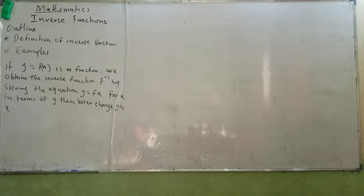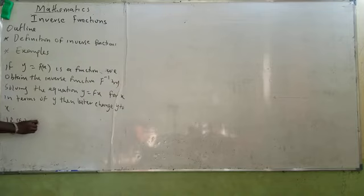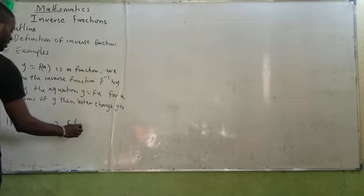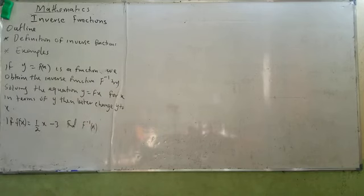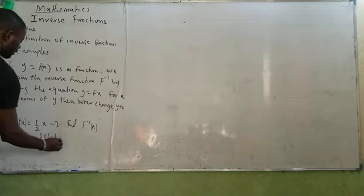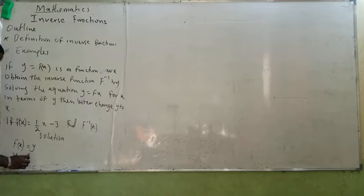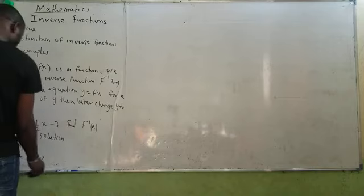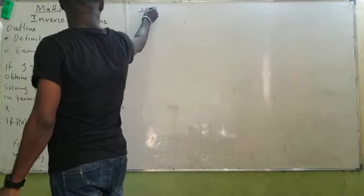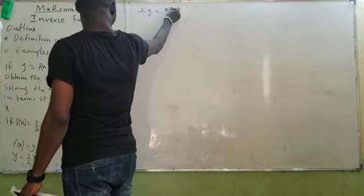For example, if f of x equals 1 all over 2x minus 3, find f inverse. Now what we just need to do — I need to work through the solution to this problem. We know that f of x equals y, therefore y equals 1 all over 2x minus 3. Now I need to make x the subject, which I will have y equals x minus 6.